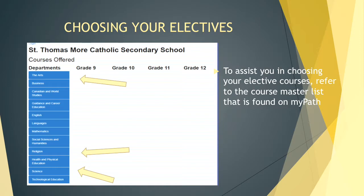Here you will see a picture of what it looks like when you log into MyPath and select courses. Under Canadian and World Studies, you can find Civics there. You would select nine courses: the two half credits, and then seven other courses.